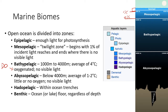Beneath that is the abyssopelagic — you'll see that 'abyss' root word — that's below 4,000 meters. Average temperature is 1 to 2 degrees Celsius, just above freezing, with little or no oxygen and no light. The hadopelagic, from the Greek root word Hades meaning the underworld, is found only within ocean trenches like the famous Mariana Trench. The benthic zone is the ocean floor, shown in brown in the diagram. Regardless of depth, wherever you have the substrate, that is the benthic zone — it applies to lake floors as well.